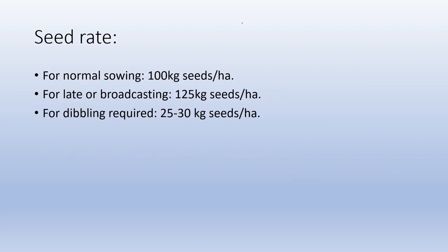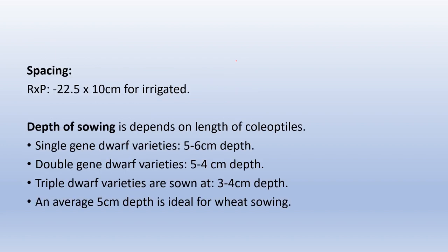Regarding seed rate for wheat: for normal sowing, seed rate is around 100 kg per hectare. For late sowing or broadcasting, seed rate is 125 kg per hectare — broadcasting always requires more seed rate. For dibbling, 25–30 kg seeds per hectare are required. Wheat spacing is row-to-row and plant-to-plant 22.5 × 10 cm under irrigated conditions. Depth of sowing depends on the length of coleoptile: for single gene dwarf varieties, depth is 5–6 cm; for double gene dwarf varieties, 4–5 cm; and for triple gene dwarf varieties, 3–4 cm. Average ideal depth for wheat sowing is 5 cm.